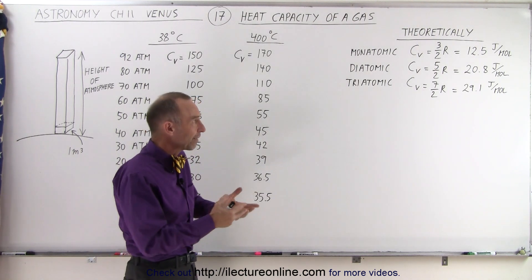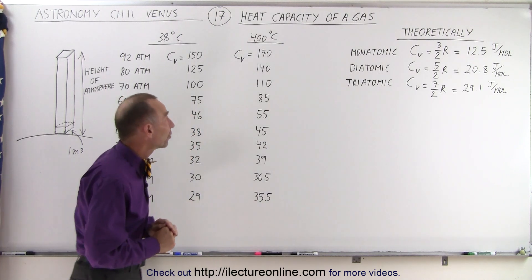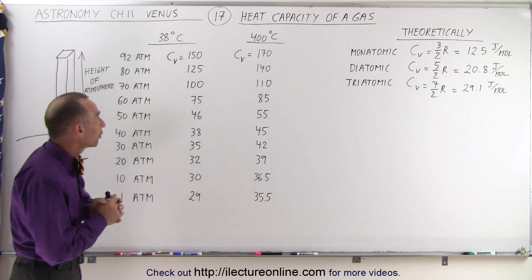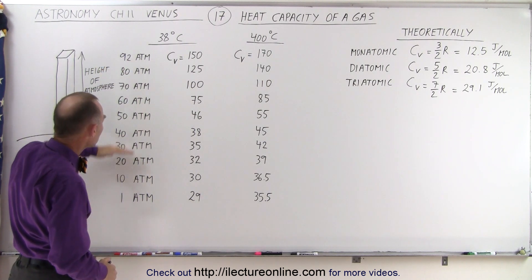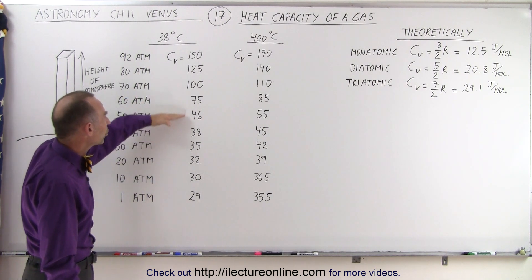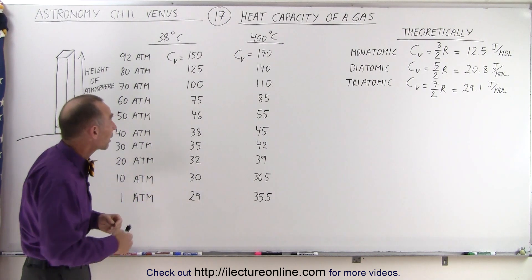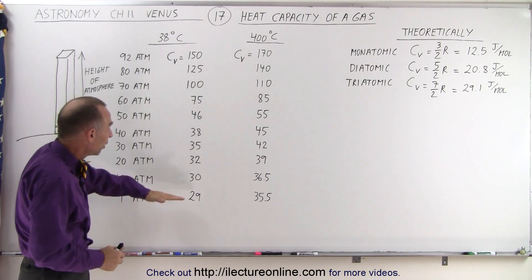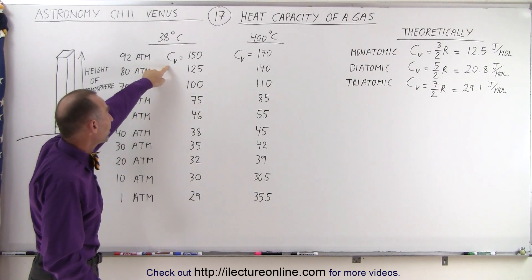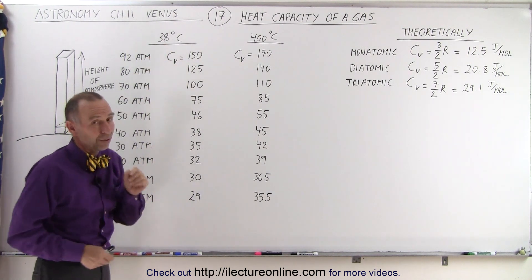At those standard temperatures and pressures found on the Earth's atmosphere, they follow pretty close to those numbers. But on Venus, that's not the case. At a temperature of 38°C — a little warmer than typical on Earth — notice that as the pressure increases, like it does in the atmosphere of Venus, the heat capacity becomes much, much larger. Per mole, it simply means that for every mole of gas, there's a lot more heat that can be contained. At 92 atmospheres on the surface, C_V reaches about 150 joules per mole, even at only 38°C.